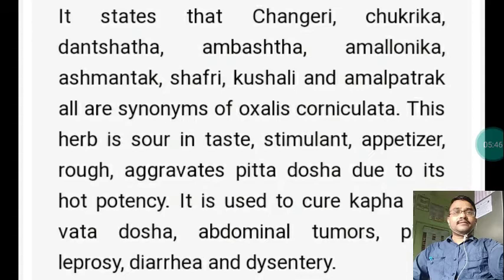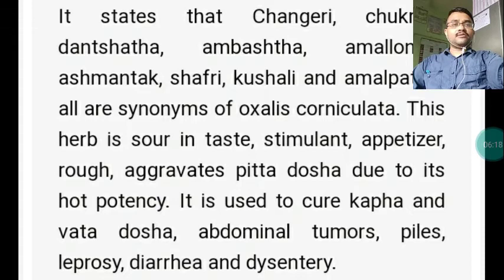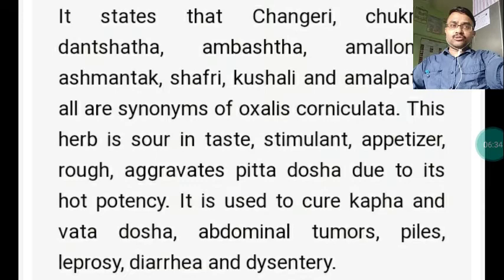This verse states that Changari, Chukrika, Dantastha, Ambastha, Amlalonika, Asmantaka, Safari, Kusali, and Amlapatraka are synonyms of Oxalis Corniculata. This herb is sour in taste, a stimulant, appetizer, and ruksha (dry). It aggravates Pitta due to its hot potency. It is used to cure Kapha and Vata dosha disorders. It is useful for abdominal tumors, piles, leprosy, diarrhea and dysentery.